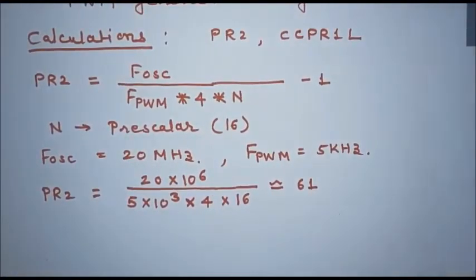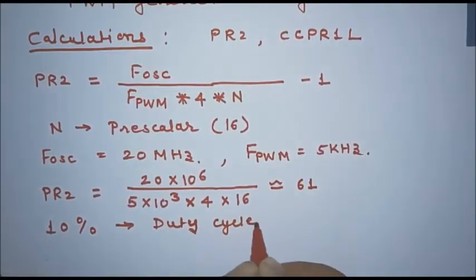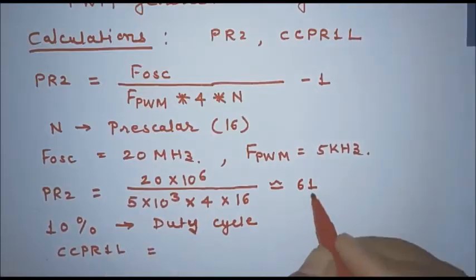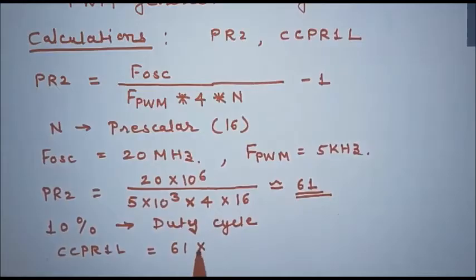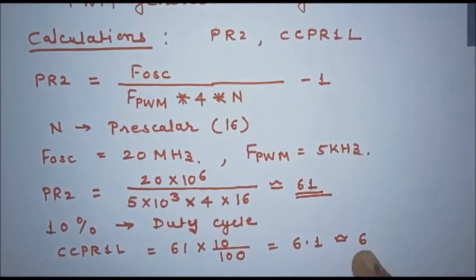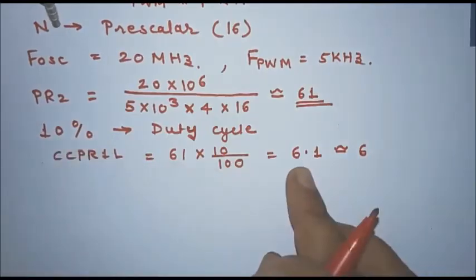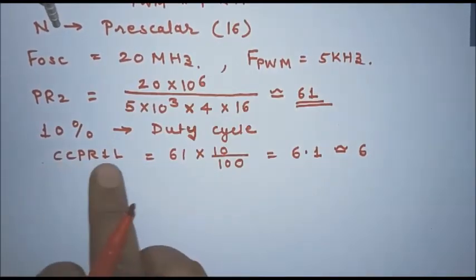To generate a PWM signal with 10% duty cycle, the count stored in CCPR1L equals 10% of the total count 61, which is 61 × 10/100 ≈ 6.1. We approximate this as 6, so 6 in decimal is stored in CCPR1L. Similarly, for any duty cycle value, calculate the count and store it in CCPR1L.